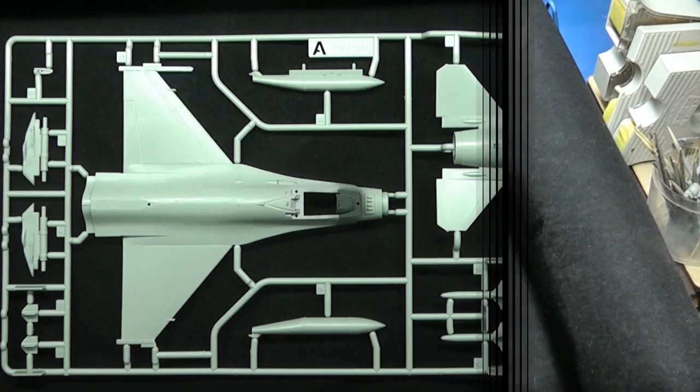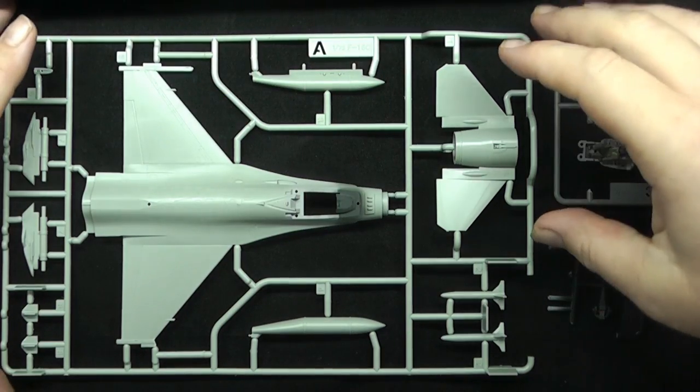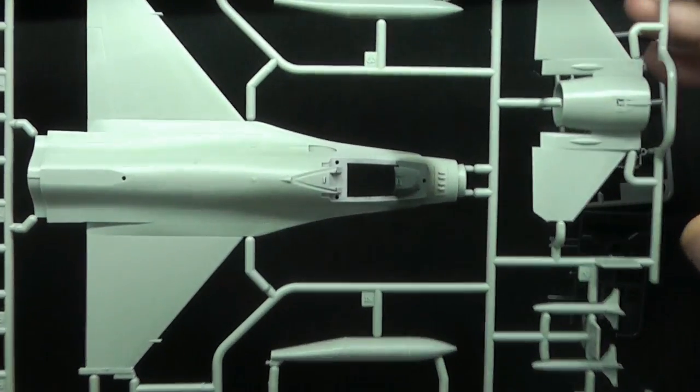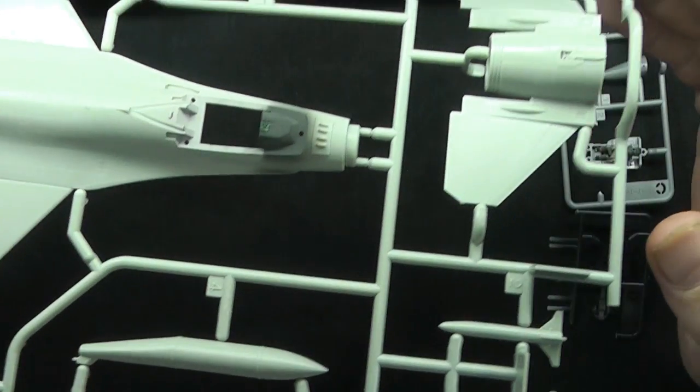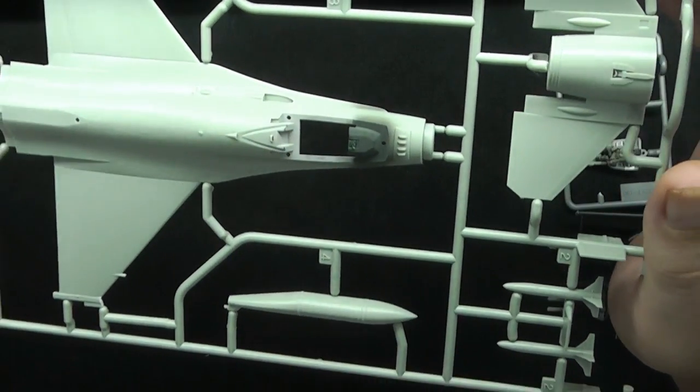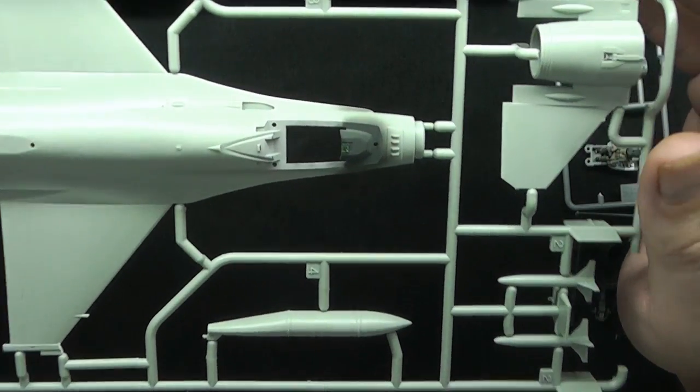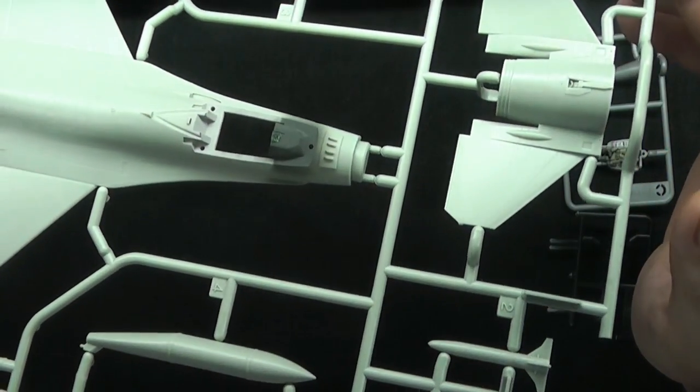So before I start assembly, what I've done is I've added a little bit of paint to the cockpit there. So as you can see, I've just done a little bit of XF-19, Ghost Grey, and a little bit of NATO Black for the instrument panel.